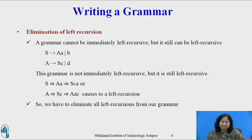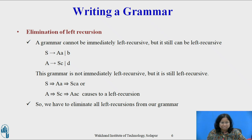A grammar cannot be immediately left recursive but can still be left recursive. By just eliminating the immediate left recursion, we may not obtain a grammar that is fully free of left recursion. Consider the grammar S derives Ae | b, A derives Sc | d. This grammar is not immediately left recursive but is still left recursive, since S derives Ae, derives Sce, and A derives Sc causes a left recursion. So we must eliminate all left recursion from the grammar.